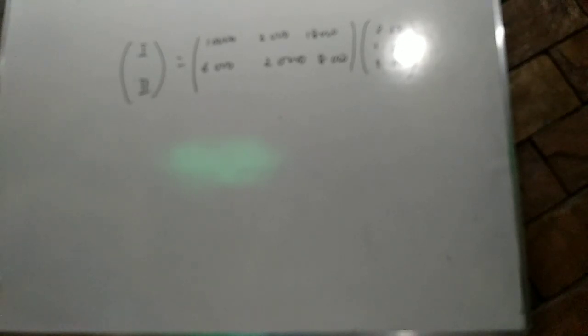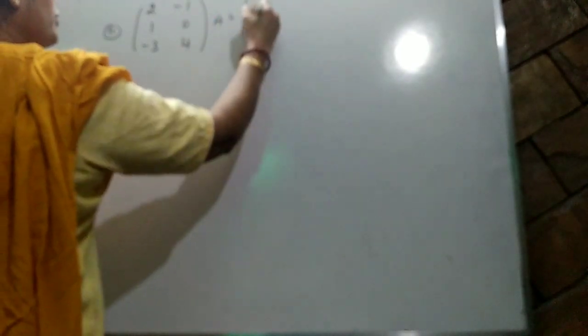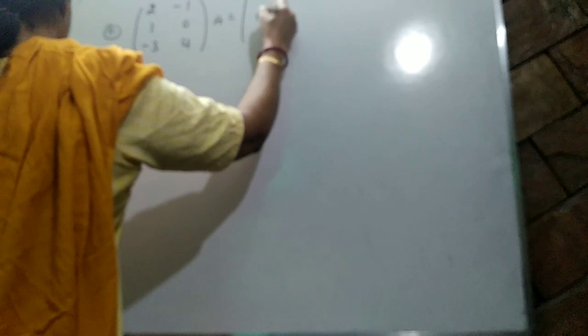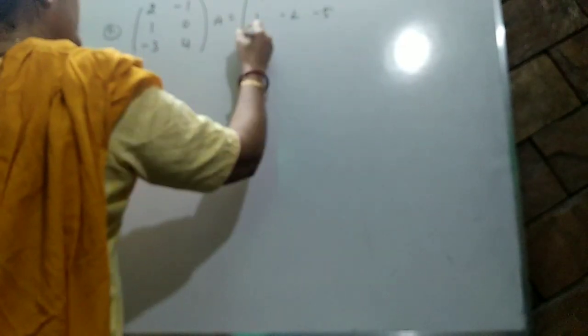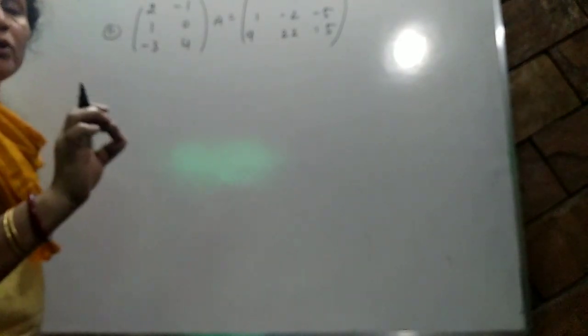Question number eleven is one of the most important questions. Instead of that question, I am taking another important one. Given the matrix equation [2,-1,1; 0,-3,4] × A = [-1,-8,-10; 1,-2,-5; 9,22,15]. First, determine the order of matrix A. The left matrix is 3×2 and the right-hand side is 3×3, so A must be 2×3.